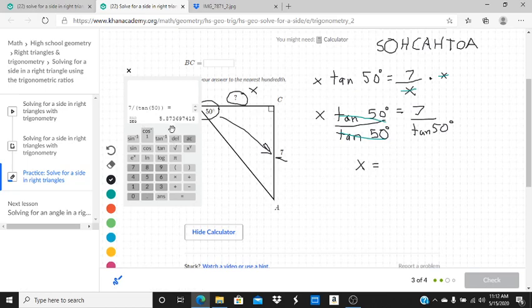We're rounding to the nearest hundredth. So because there's a 3 after the 7, we're going to keep it as 7. We have 5.87. Check our work. Look at that. We got it correct.